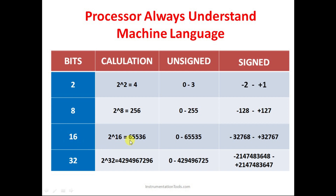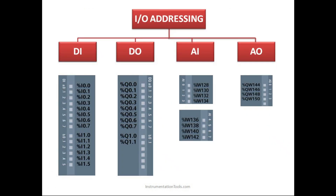For 16 bits, two to the power 16 is 65,536. Unsigned integers range from 0 to 65,535. Signed integers are divided in half: minus 32,768 to plus 32,767 — zero is included in the positive side, which is why it is 32,767. For 32 bits, two to the power 32 is 4,294,967,296. Unsigned range is 0 to 4,294,967,295, and signed is minus 2,147,483,648 to plus 2,147,483,647.